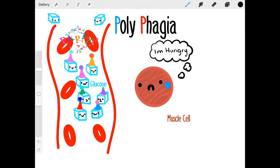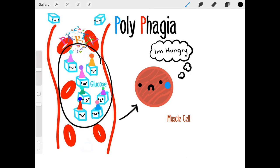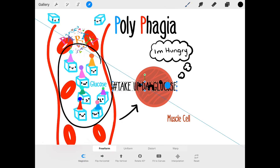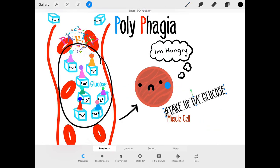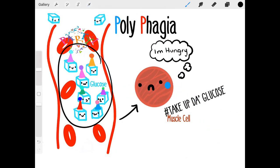The second P, polyphagia, happens because even though you have plenty of glucose floating around in your blood, it's not getting into the cells. Insulin can be sending out the message, but it's not doing any good if your cells are getting annoyed — or if insulin is out of town, as in type 1 diabetes. So if your cells are hungry, you're going to be hungry. You can keep eating normally, but it's not going to do any good, and you'll have polyphagia.